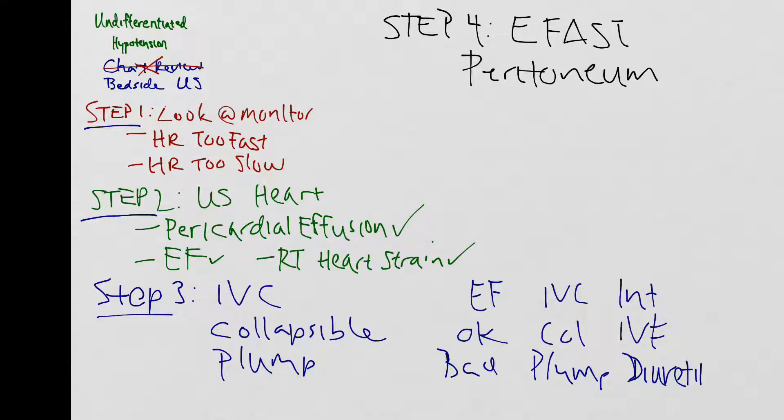We'll also take a look at the lungs to see whether or not there's any evidence of a pneumothorax. Maybe the patient has a tension pneumothorax and that's what's leading them to be hypotensive. And all you need to do is stick a needle in the second intercostal space in order to decompress their chest and restore their blood pressure.